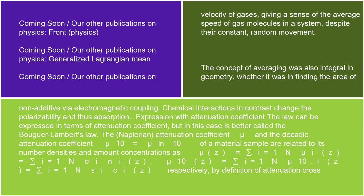Expression with attenuation coefficient. The law can be expressed in terms of attenuation coefficient, but in this case is better called the Bouguer-Lambert Law. The Napierian attenuation coefficient μ and the Decadic attenuation coefficient μ₁₀ = μ/ln(10) of a material sample are related to its number densities and amount concentrations by the definition of attenuation cross-section and molar attenuation coefficient.